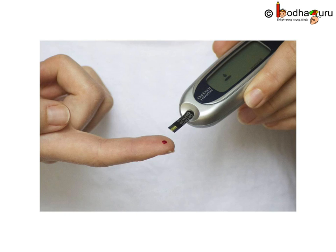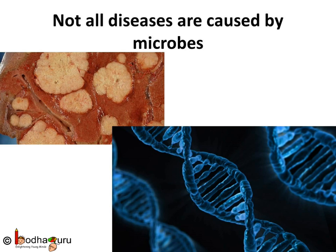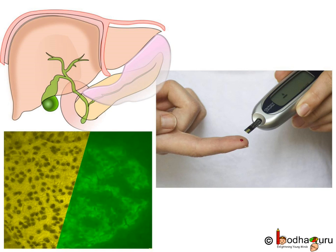But some diseases don't spread from one person to another, like diabetes, jaundice, etc. Many of these non-infectious diseases are not caused by microbes. For example, cancer sometimes is caused by genetic abnormalities. Diabetes is caused by destruction of beta cells in pancreas. So there is no agent involved that can spread this disease.